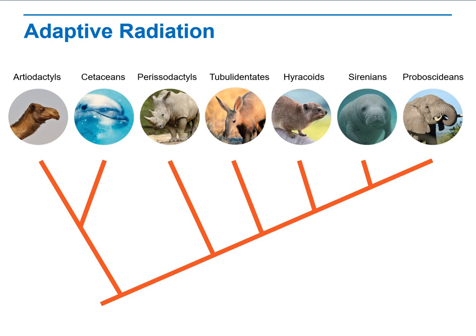Dinosaurs underwent adaptive radiation during the Mesozoic era. After most dinosaurs became extinct, an adaptive radiation of mammals began. This is an example of sequential appearance of groups in the fossil record. Galapagos finches and Hawaiian honeycreepers also experienced adaptive radiation.